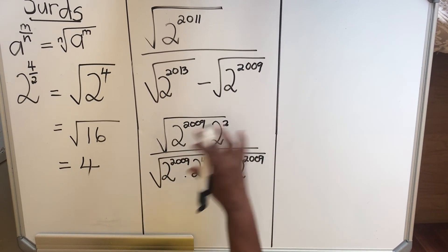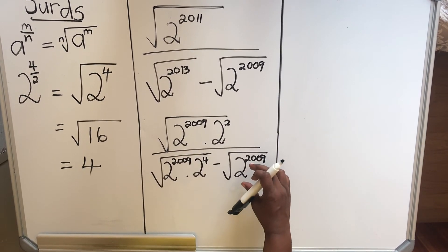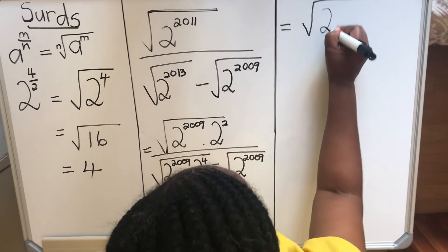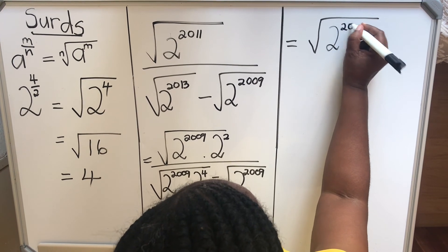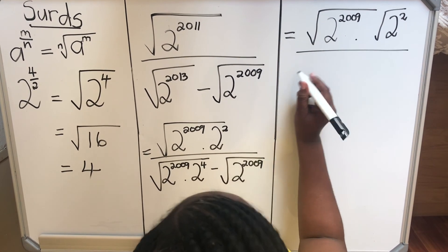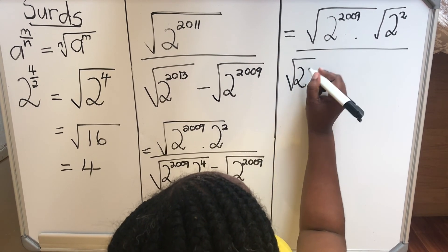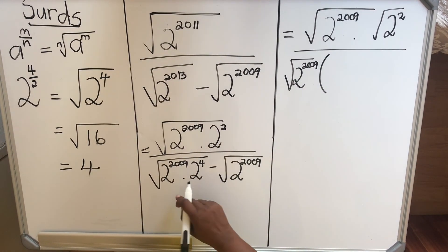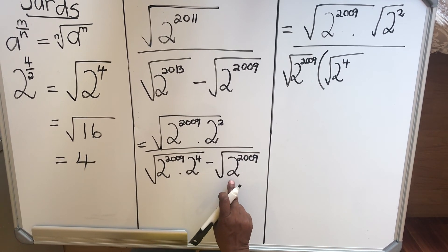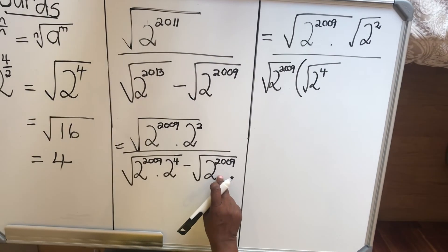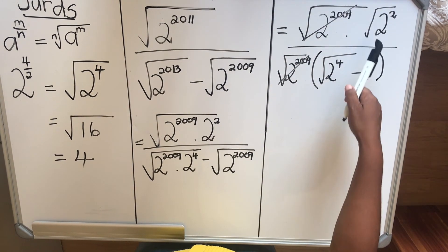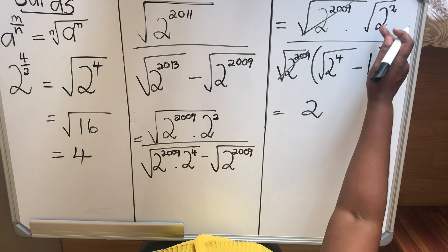Now the numerator, it's one term, it's fine. But the denominator, we have two terms, we have to take out the common factor. So with the numerator we leave it as it is. We have 2 to the power 2009 and then we have 2 to the power 2, divided by common factor, the square root of 2 to the power 2009. If I take 2 to the power 2009, I'll be left with the square root of 2 to the power 4. But here if I take square root of 2 to the power 2009 as a common factor, to get this back I will multiply it with 1.